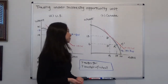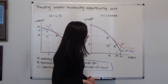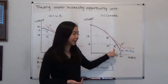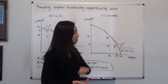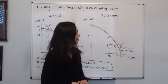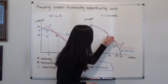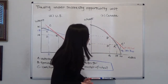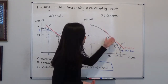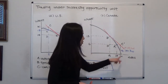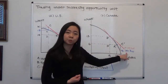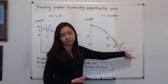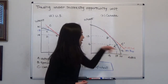What about Canada? Suppose they choose to produce and consume at point A prime, on their production possibility curve. You can find the tangent line there. The tangent line tells you the opportunity cost of one automobile is three bushels of wheat.